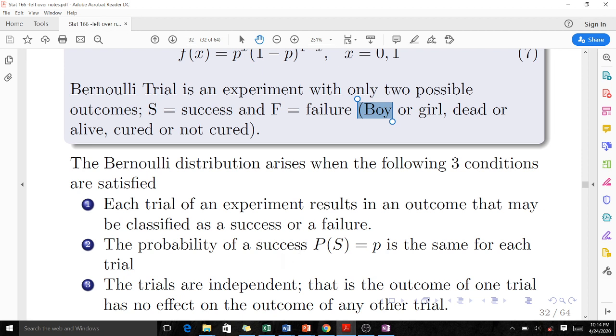And the trials are independent. That is, the outcome of one trial has no effect on the outcome of any other trial. When these three conditions are satisfied, then we say our random discrete variable follows the Bernoulli distribution.